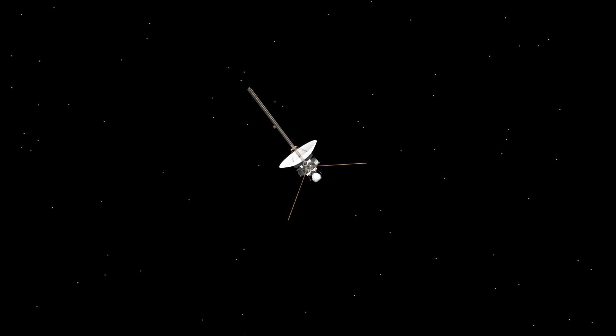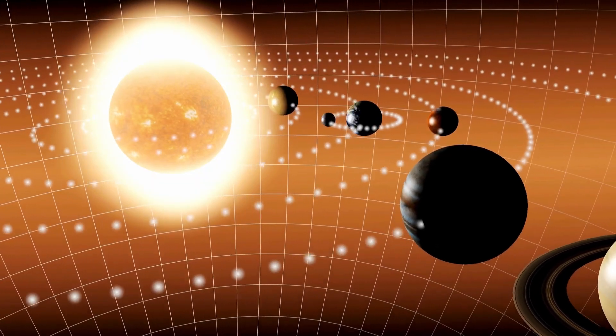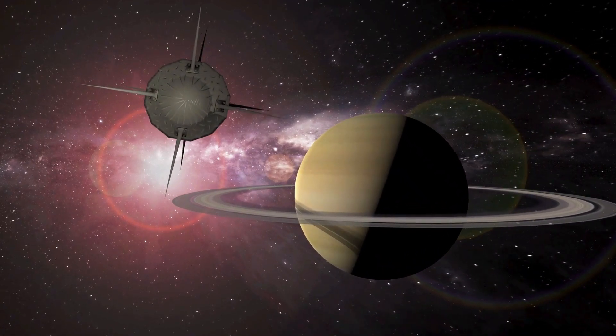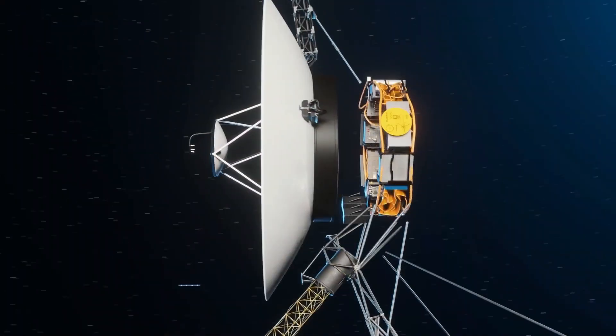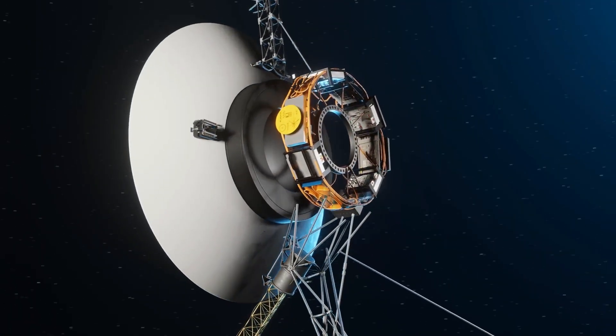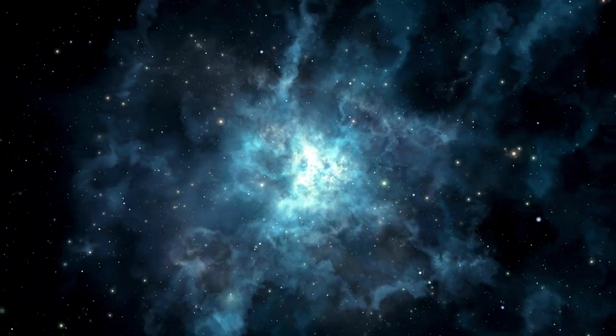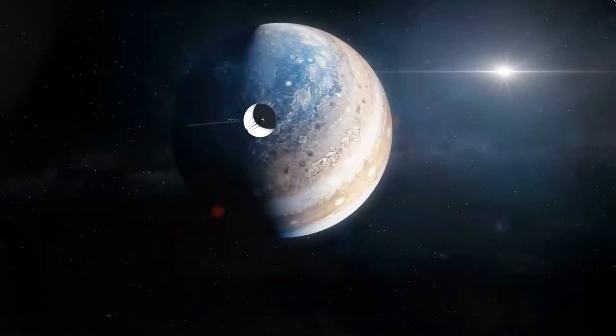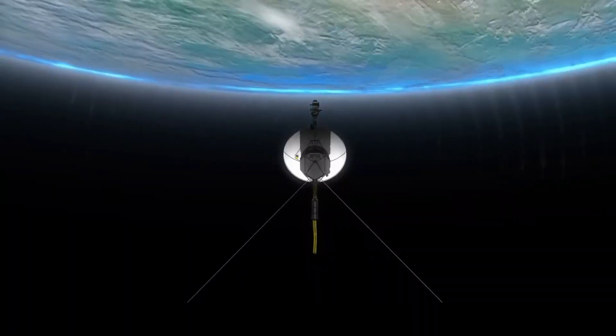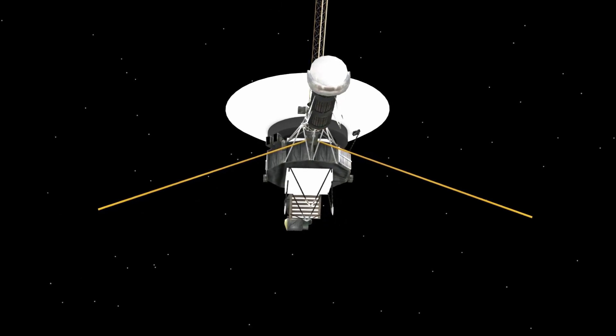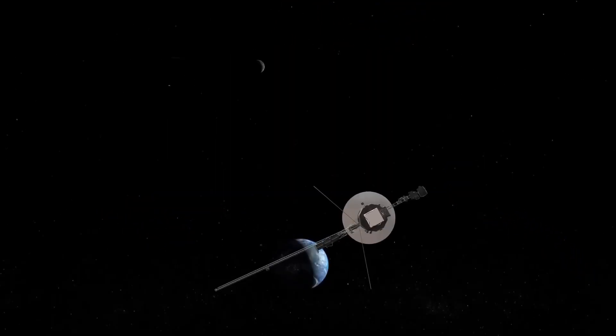Voyager 2's final transmissions have given us some of the most stunning and poignant images ever captured, pictures of the solar system's edge and the distant glow of far-off stars. These images serve as a final gift from a spacecraft that has journeyed farther than any other human-made object in history. These final glimpses remind us of the vastness of space and the small yet significant role humanity plays within it. They serve as a poignant reminder of how far we've come and how much there is still to discover.